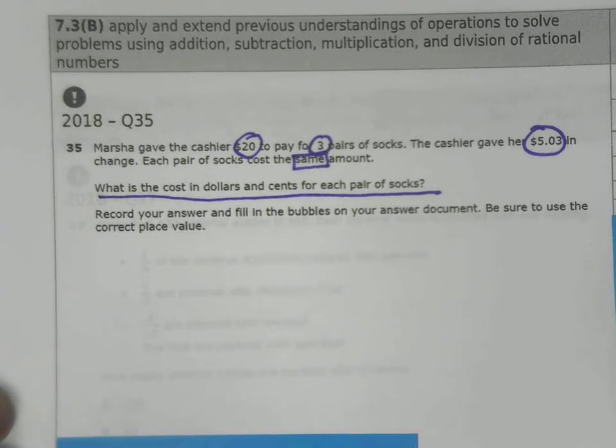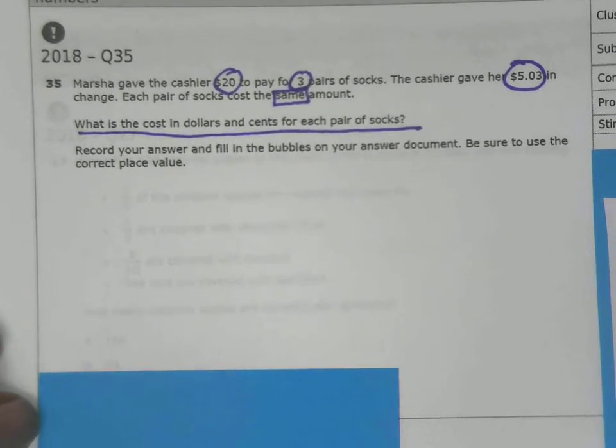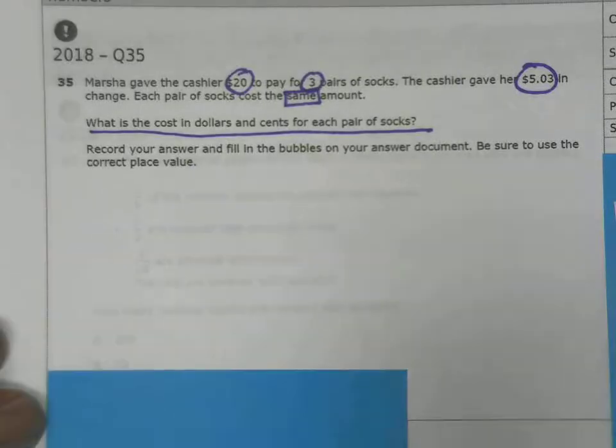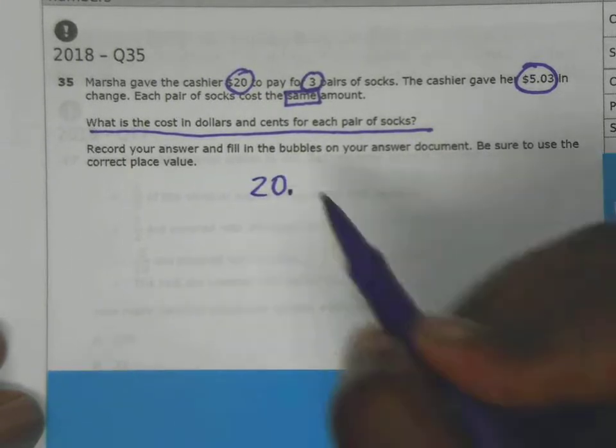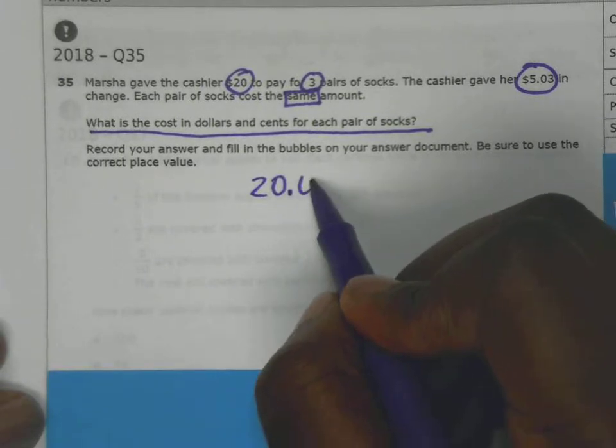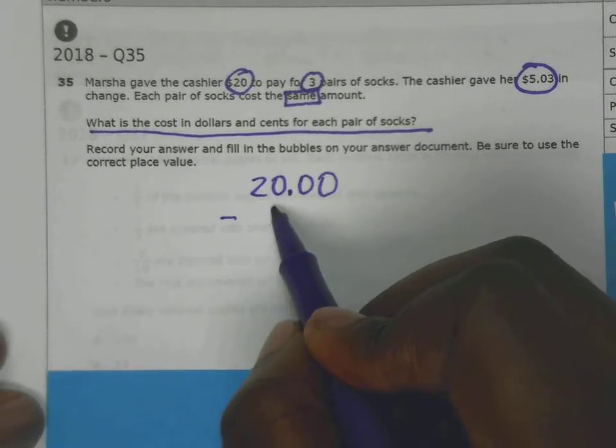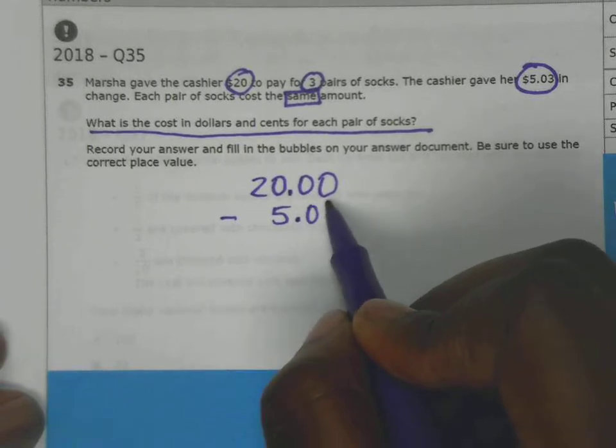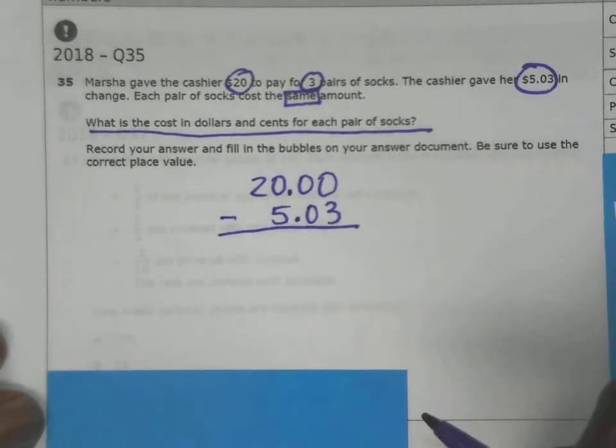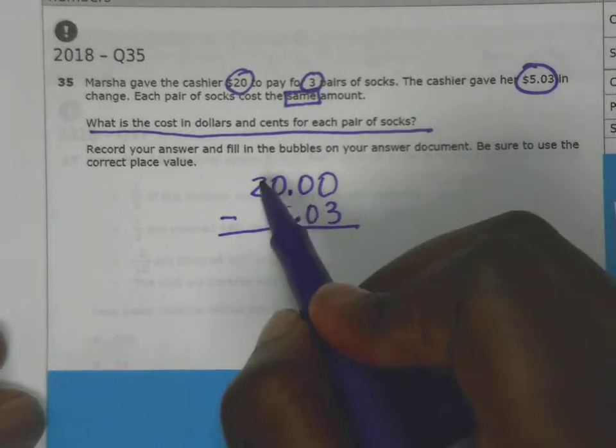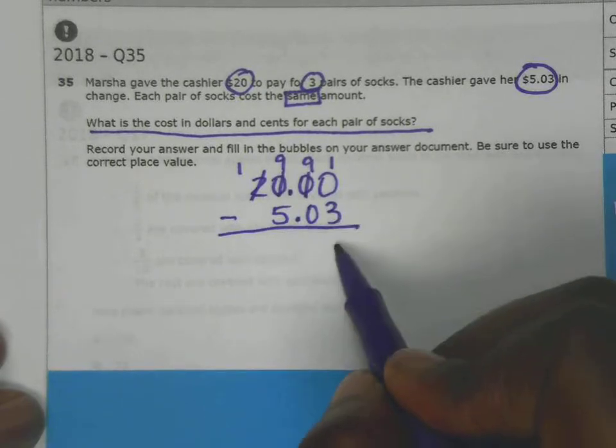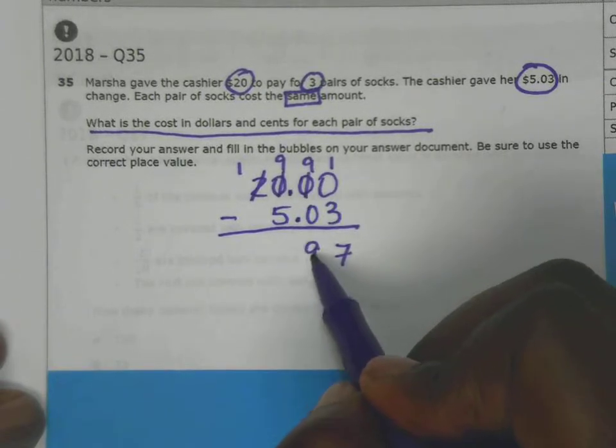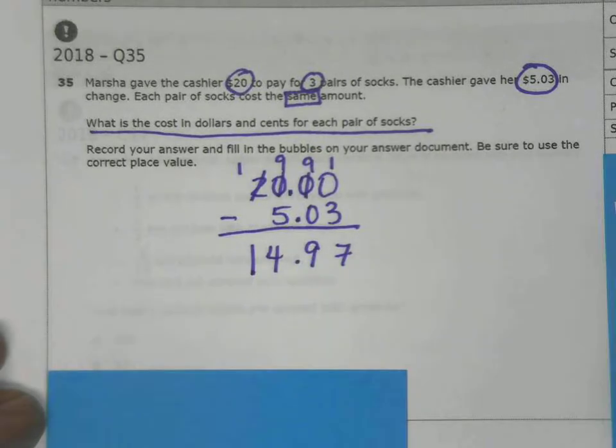First, I need to figure out how much she paid in all. That means I need to subtract. I'm going to do $20 minus $5.03. Notice I line up my decimals - when you subtract, the decimals line up. I need to borrow. So she paid $14.97 in all.